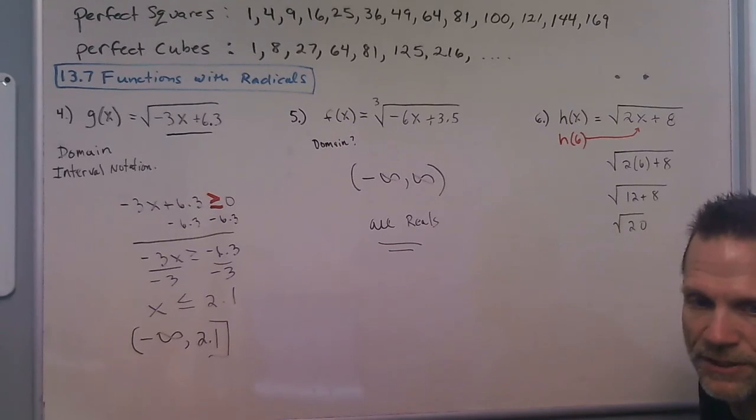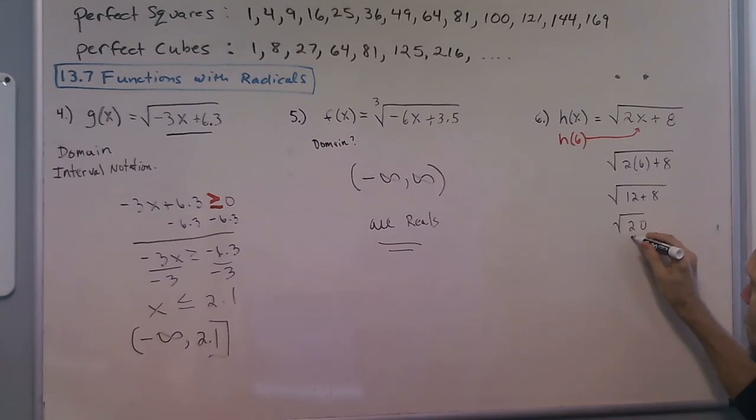And then we have to see if the problem's asking us to write the decimal or the simplified version. And it says keep it in radical notation. So we have the square root of 4 times the square root of 5 to 2 radical 5.